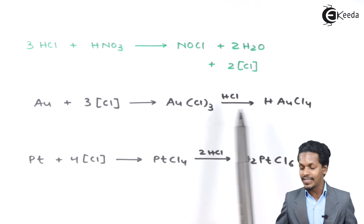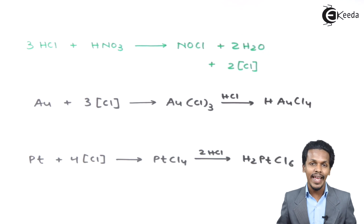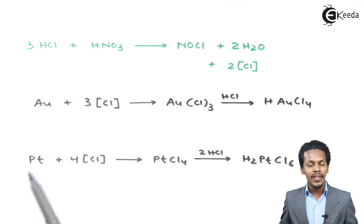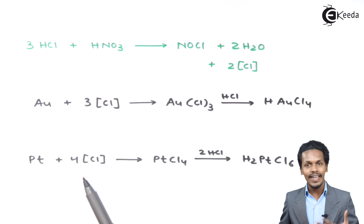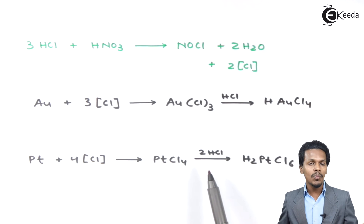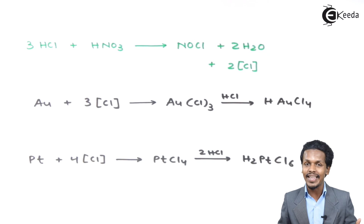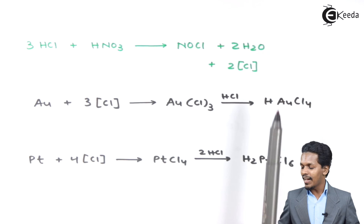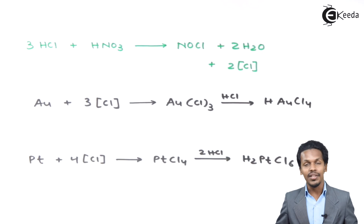AuCl3, when further reacted with HCl, forms HAuCl4, known as chloroauric acid. For platinum, when it reacts with aqua regia, four moles of nascent Cl react with platinum to produce PtCl4 (platinum chloride). On further reaction with two moles of HCl, it produces H2PtCl6, known as chloroplatinic acid. These are the products obtained when noble metals react with aqua regia.